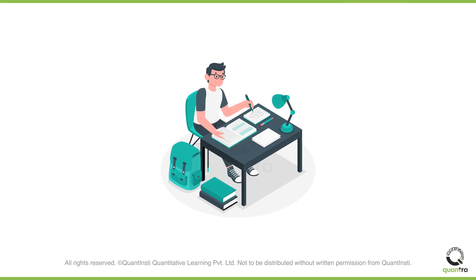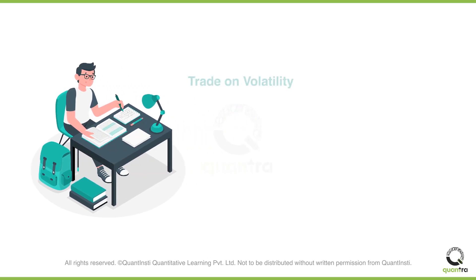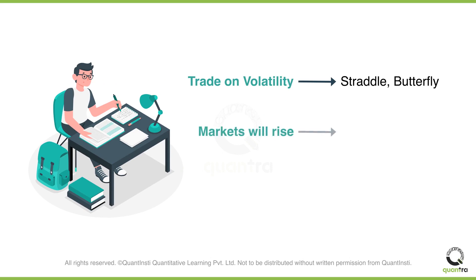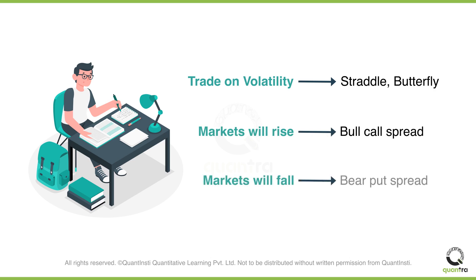John learns that there are popular options trading strategies to capitalize on your views about the market. For example, if you want to trade on volatility, you can go with the straddle or butterfly strategy. If you think that the markets will go up, then you can go with the bull call spread. And if you think that the markets will go down, then you can go with the bear put spread.